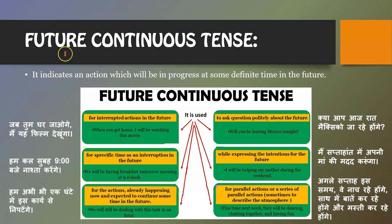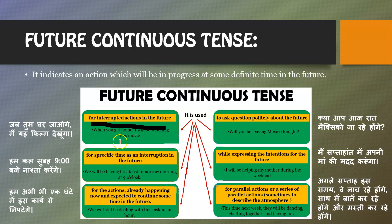Future continuous tense indicates an action which will be in progress at some definite time in the future. It is used for interrupted actions in the future. For example, 'When you get home, I will be watching this movie' — the watching is interrupted. It is also used when a specific time is mentioned as an interruption in the future.